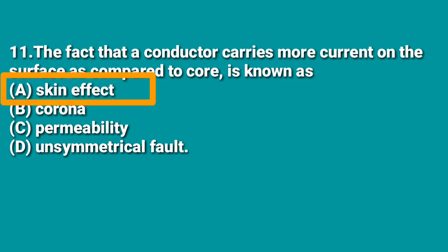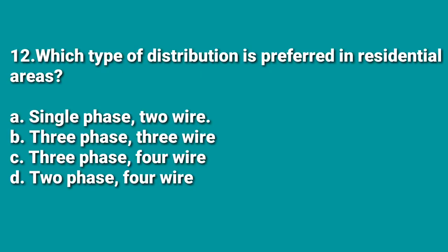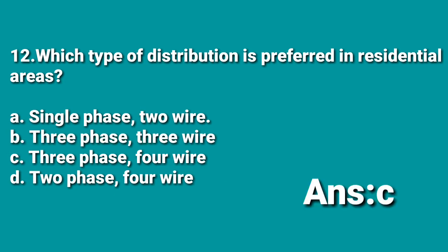The next question: which type of distribution is preferred in residential areas — A: single-phase 2-wire, B: 3-phase 3-wire, C: 3-phase 4-wire, D: 2-phase 4-wire? Normally in residential distribution systems, the 3-phase 4-wire system is preferable because the neutral wire must go to every house, and it can also withstand unbalanced loads. Hence the answer is C.